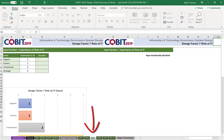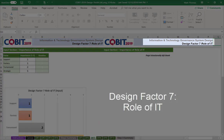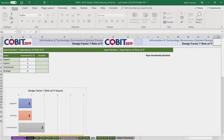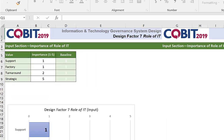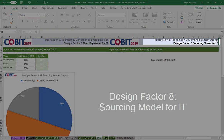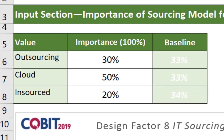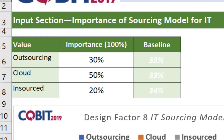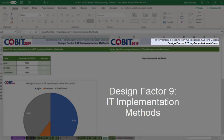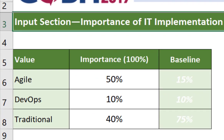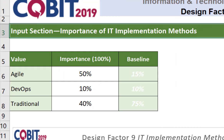Design factor number seven is role of IT. This is very important because in many organizations, IT can be viewed as a support role, a factory, a turnaround, or even as a strategic role, and you give this an importance factor of one through five. Design factor number eight is sourcing model for IT — do we outsource, use a lot of cloud services, or insource? We put a percentage here, and those should add up to 100%. Design factor number nine is implementation methods. We can identify whether we are an agile-based organization, doing continuous deployments through DevOps, or traditional like a waterfall approach — again, percentage-based.